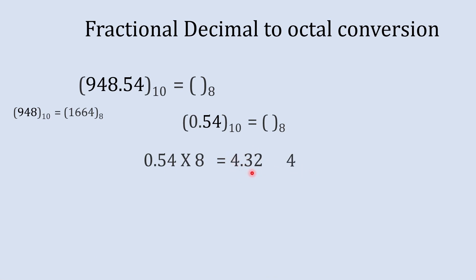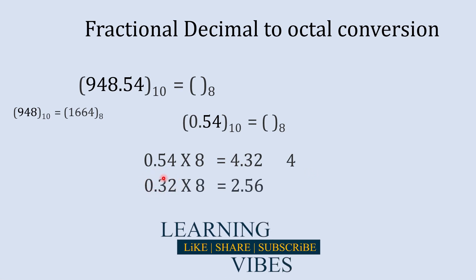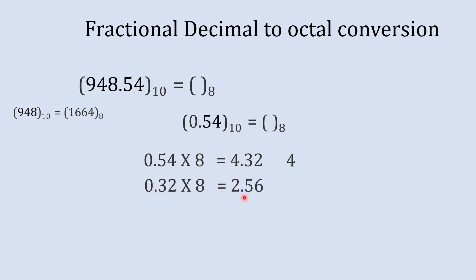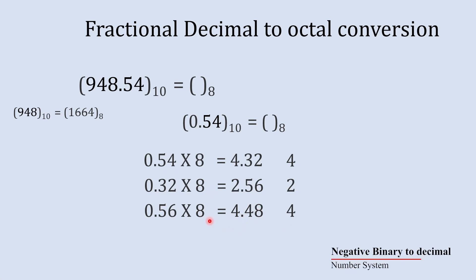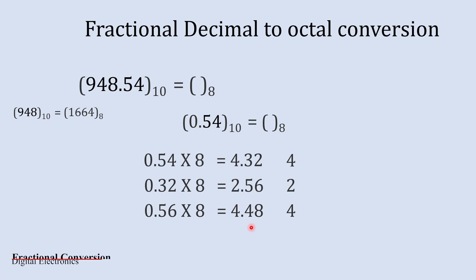What remains is 0.32. We multiply 0.32 by 8, which gives 2.56. We take the whole number 2 aside. The remaining 0.56 multiplied by 8 gives 4.48. We take whole number 4 aside. You can keep on multiplying the remaining number by 8, and the question is: up to which point should you keep multiplying?